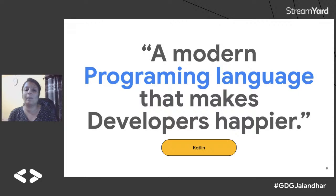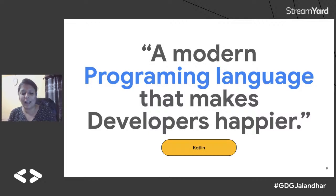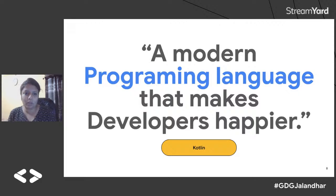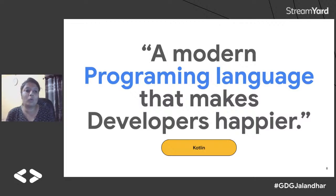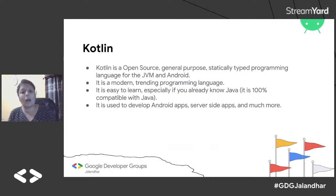There's a quote: 'A modern programming language that makes developers happier.' That language is Kotlin. With Kotlin you can build very robust applications with less code, and it supports billions of devices. Now we're going to talk about how we can use Kotlin with Android to make applications.